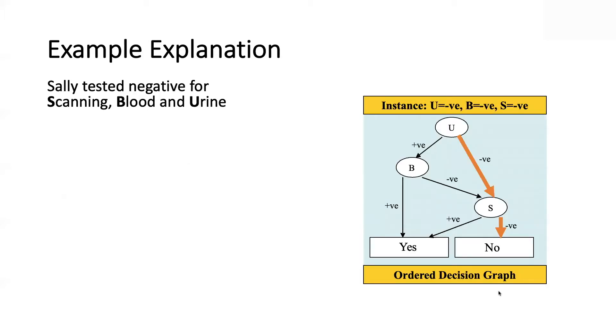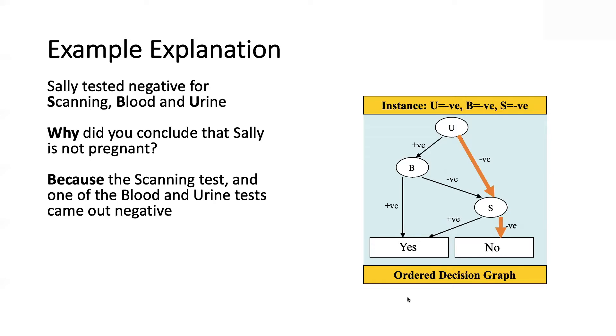So here we have our original classifier from earlier, and we have a patient, Sally, that tested negative for all of these tests, and she was classified as not pregnant, and we ask why. And the general explanation here is because the scanning test came out negative, and one of the blood and urine tests came out negative.